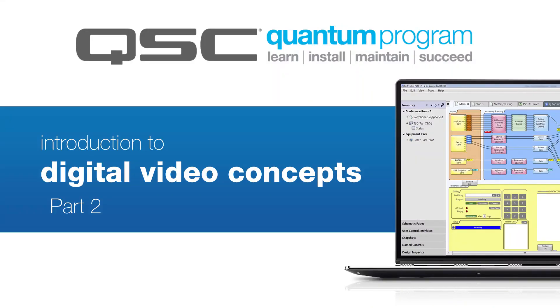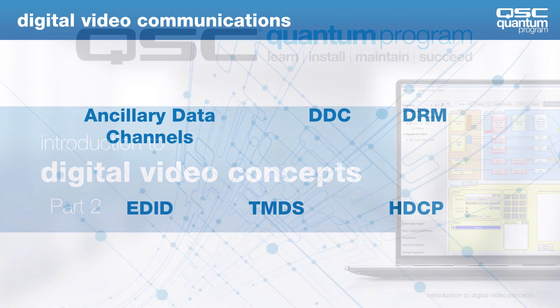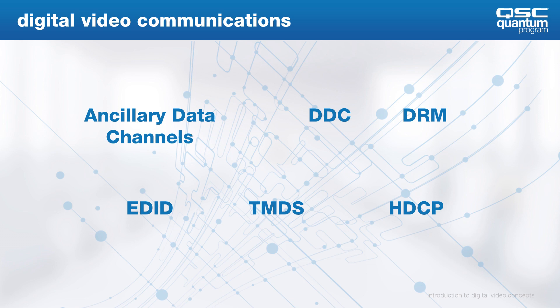Usually when you're troubleshooting digital video, it's usually not because of the actual video data, but more the ancillary video tech like these that come along with it. These provide communications between the source, the sync — which is either the display or endpoint device — and the repeater devices.